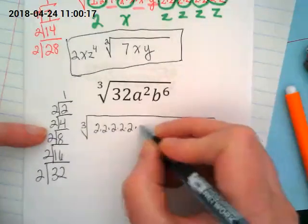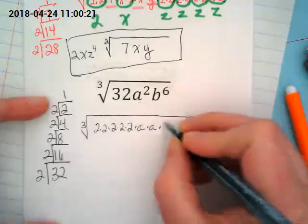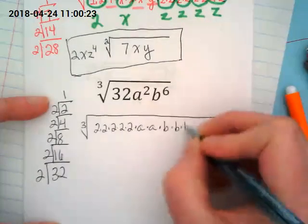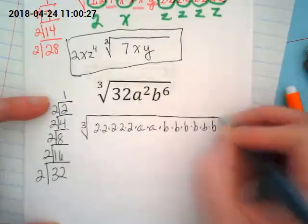How many As? Two. I know that means they're going to stay inside. How many Bs? Six. Those are going to be taken out. So B to the third outside.